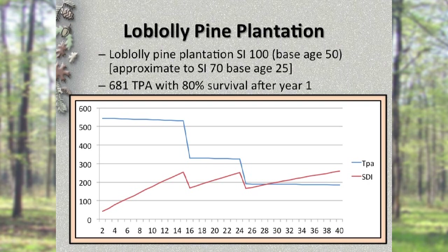This figure demonstrates one of the tools used by professional foresters to make thinning recommendations — trees per acre and SDI, or Stand Density Index. As trees increase in size and become too dense, growth can slow. The SDI formula is a tool foresters use to determine when to thin, how many trees to remove, and how many to leave so that no growing space is wasted. For example, 681 trees per acre were planted, and only 80% survived after the first year. SDI criteria indicated that a thinning was necessary at age 15, and a second thinning at age 25. Remember, the decision to conduct a thinning is based on biological criteria.